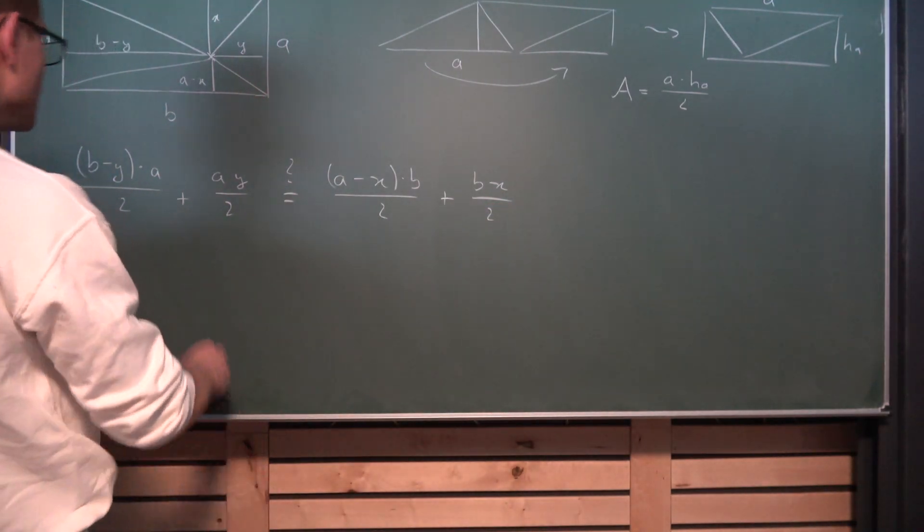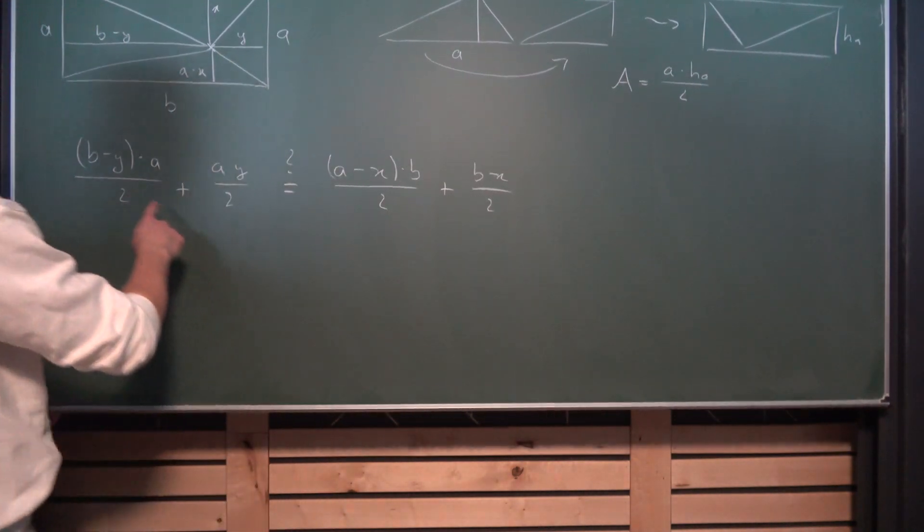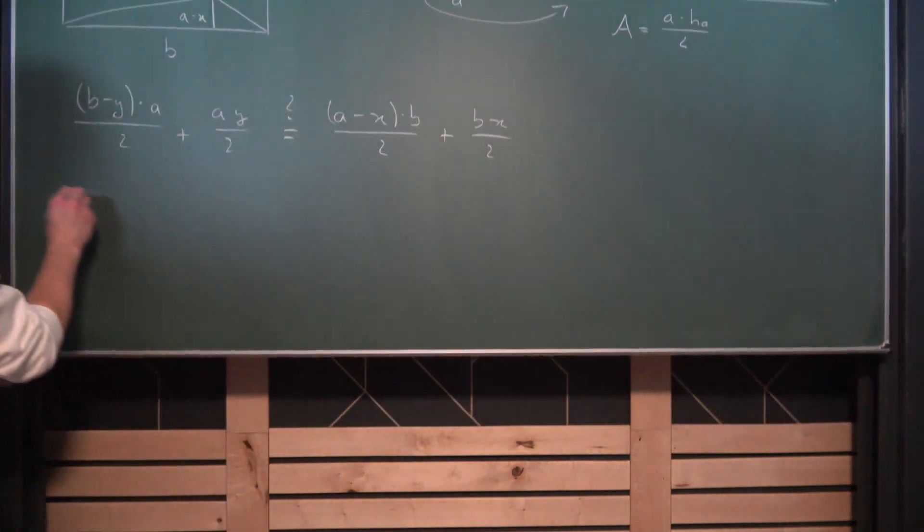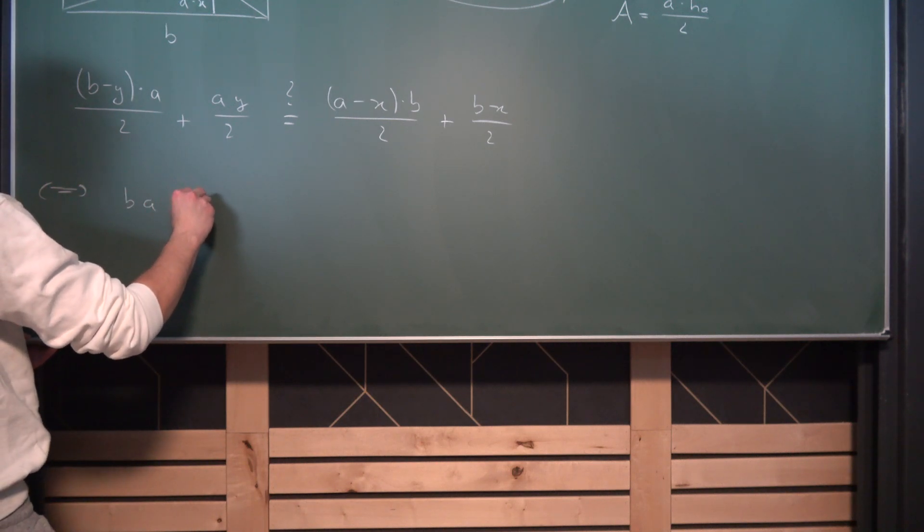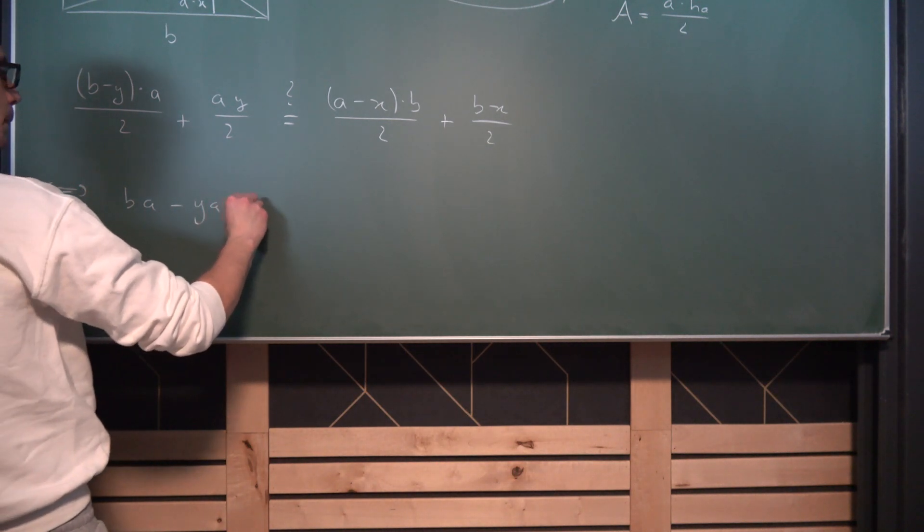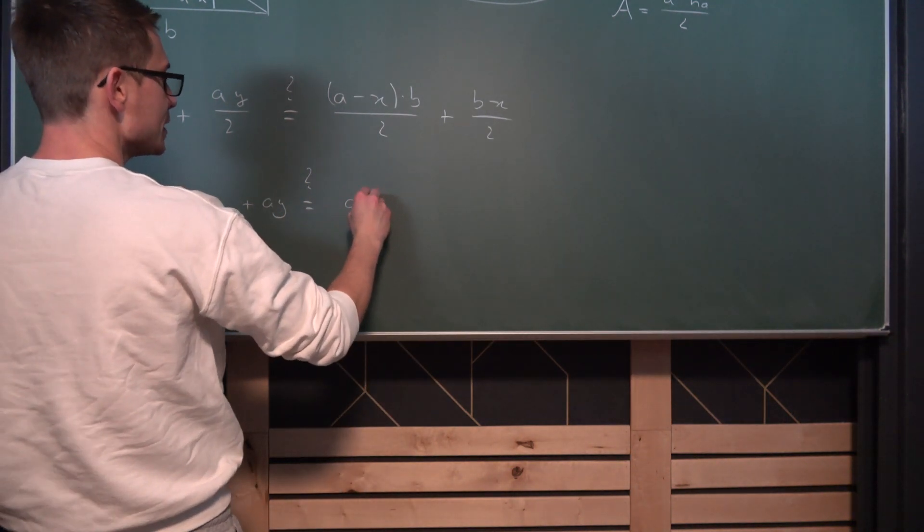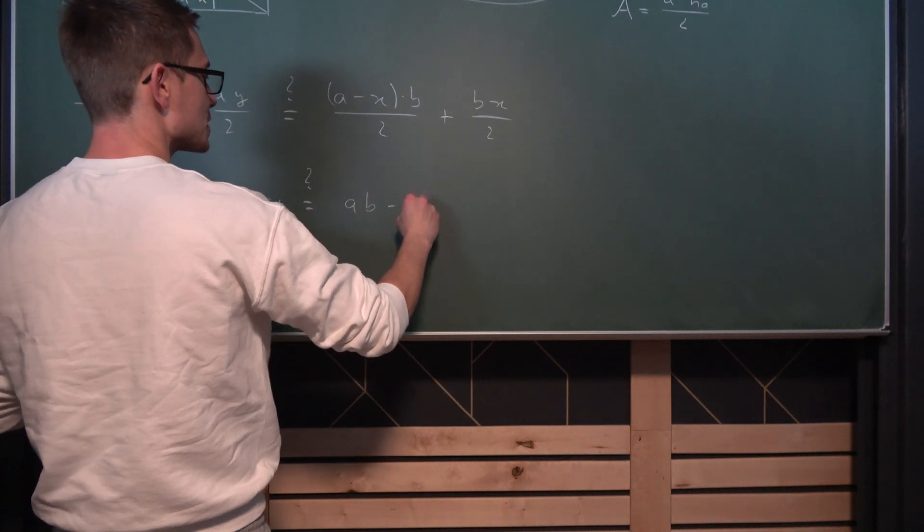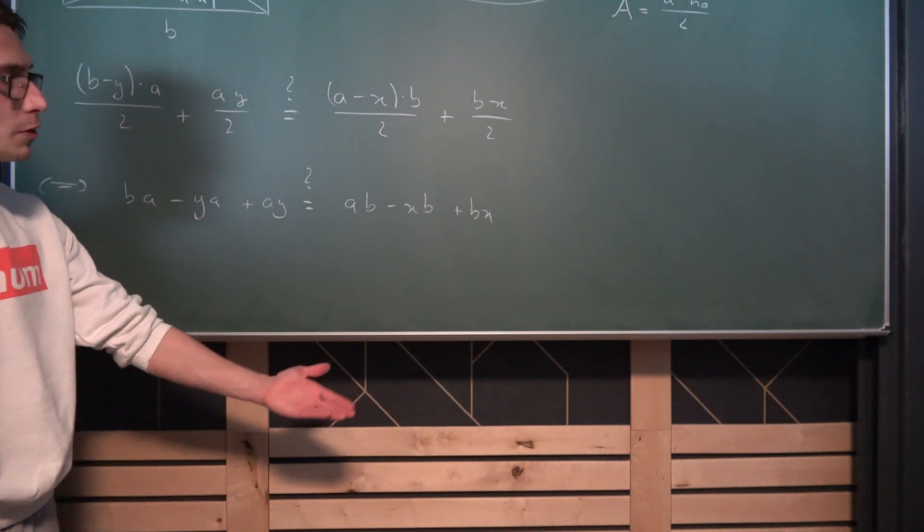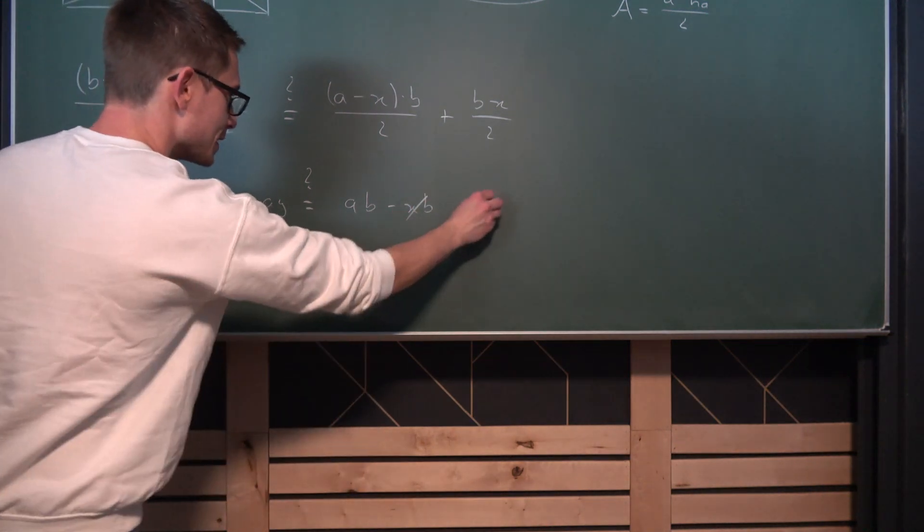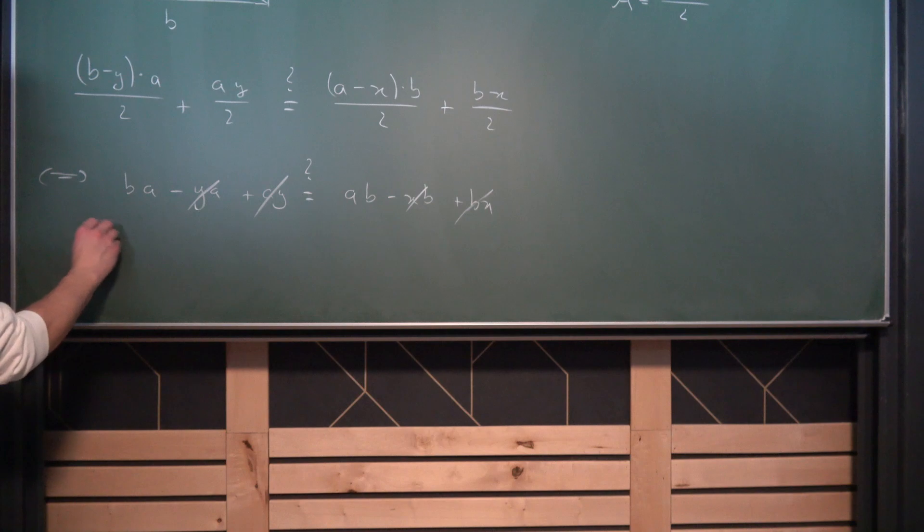And now let's do some algebra. At first we are going to distribute everything. You're also going to notice that we can multiply both sides by two. Leaving us overall with B times A minus Y times A plus Y times A is equal to A times B minus X times B plus B times X. And lo and behold, this right here is going to cancel out. Leaving us with BA is equal to AB.